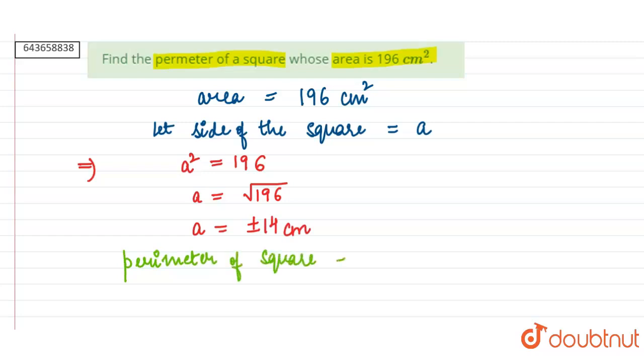Perimeter of a square is equals to 4 into side, that is 4 into A. This becomes 4 into 14 which is equals to 56 centimeters.